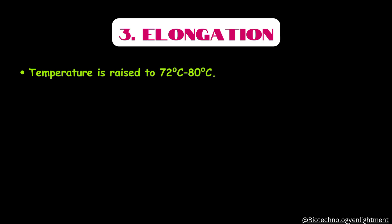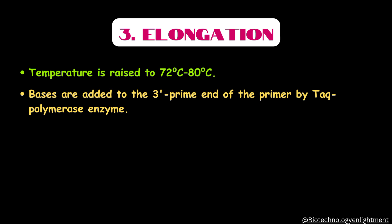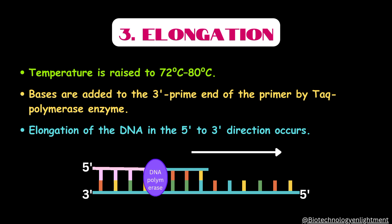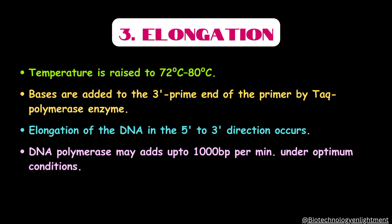The third step of PCR is elongation. In elongation, the temperature is raised to 72 to 80 degrees Celsius. In this step, bases are added to the 3-prime end of the primer by the help of Taq polymerase enzyme. This Taq polymerase enzyme is a kind of DNA polymerase enzyme which helps to initiate the adding of dNTPs on the 3-end of the primer. The process of elongation of DNA occurs in the 5-prime to 3-prime direction. DNA polymerase may add up to 1000 base pairs per minute under optimum conditions and we will get the desired DNA strands.